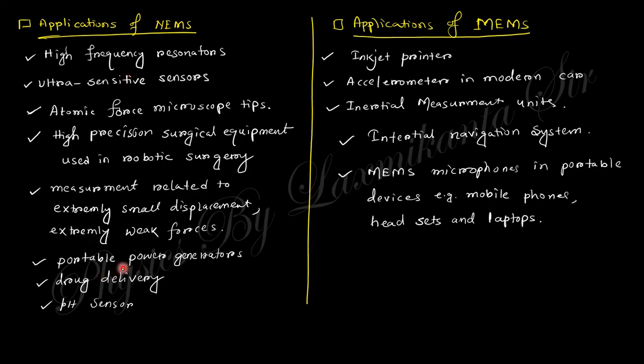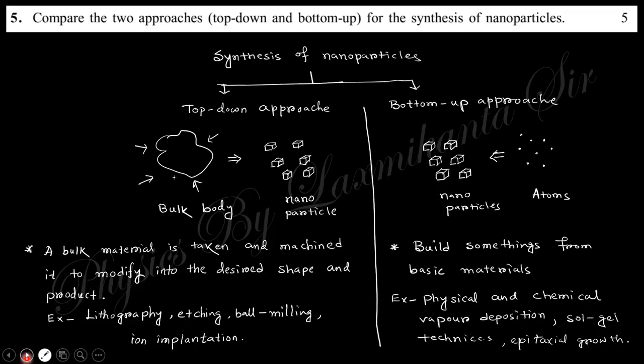Next question compares two approaches: top-down and bottom-up for synthesis of nanoparticles. Top-down means you have a bulk material and through etching reduce the size into nanoparticles. Bottom-up means you have atoms and accumulate them to produce nanoparticles.